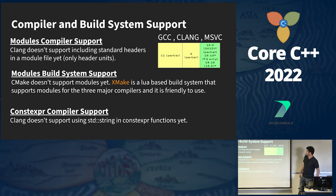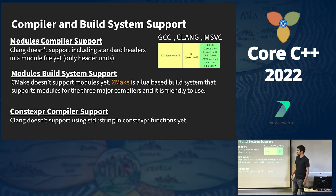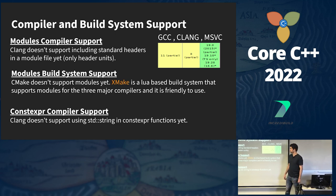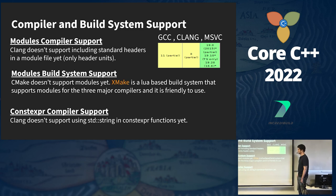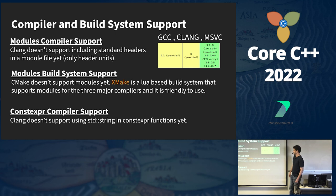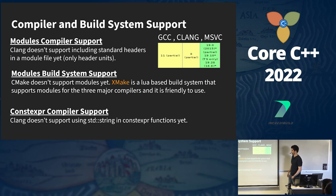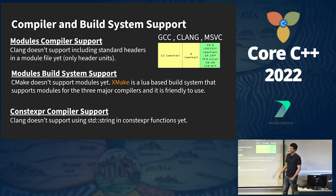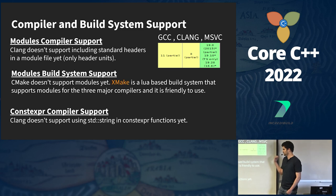Regarding compiler and build system support: module implementation status is not complete yet across compilers. If you want to use modules now, an important note is that Clang doesn't support including standard headers in module files yet — only header units — and compiling header units in Clang is not as straightforward as you might hope. CMake doesn't support modules yet, but I found XMake, a Lua-based build system that supports modules for all three major compilers and is very friendly to use with a Visual Studio Code extension. Also, Clang doesn't support using std::string in a constexpr function, so some code examples from previous slides can't be compiled with Clang yet.